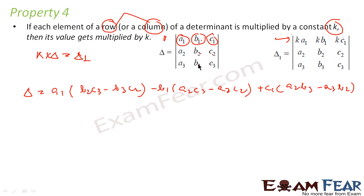Continuing the expansion of the first determinant: for element b1, we cannot take the row or column it belongs to, so we take the remaining elements — (a2c3 minus a3c2). For element c1, we similarly take the four remaining elements to get (a2b3 minus b2a3).